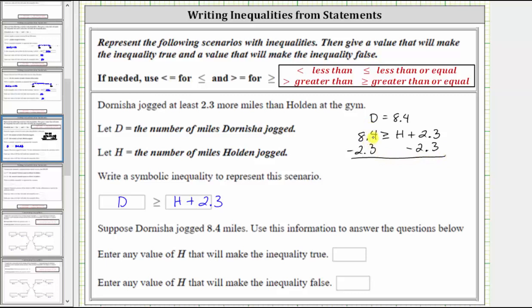On the left side, 8.4 minus 2.3 is 6.1. We have 6.1 is greater than or equal to. On the right side, 2.3 minus 2.3 is zero, which is why we subtracted 2.3 on both sides. We now just have H on the right.